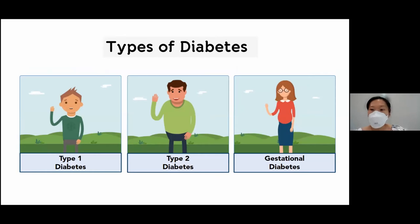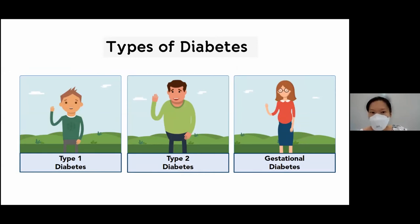Diabetes is a condition where we cannot handle sugar properly, resulting in too much sugar in the bloodstream. There are several different forms and types of diabetes. The three common types we see in our clinic are type 1 diabetes, type 2 diabetes, and gestational diabetes — which is a form of diabetes that occurs in the later parts of some pregnancies. Today, I will focus on type 1 and type 2 diabetes.